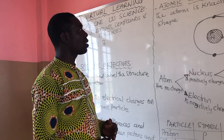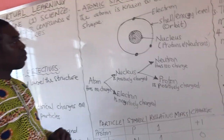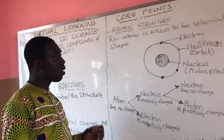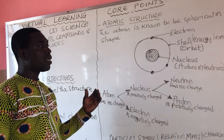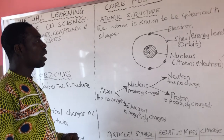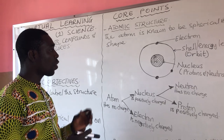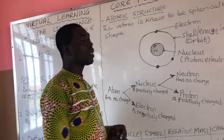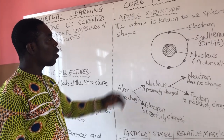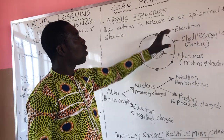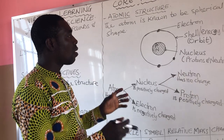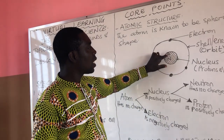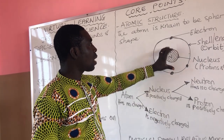Within the atoms we have subatomic particles. The atom is known to be spherical in shape, and it is made up of a nucleus, which is the central part of the atom. The nucleus contains two particles: protons and neutrons. Protons are positively charged and neutrons have no charge. Electrons orbit around the shell or energy level, while the nucleus at the center contains the protons and the neutrons. This is the structure of the atom.